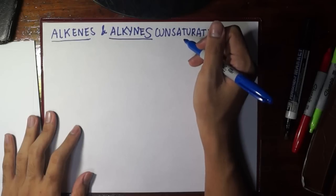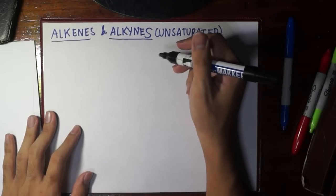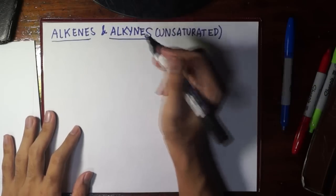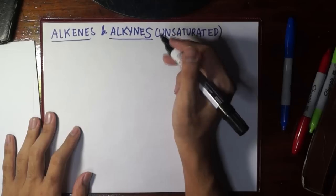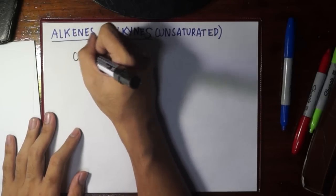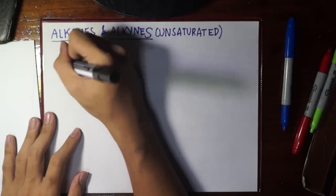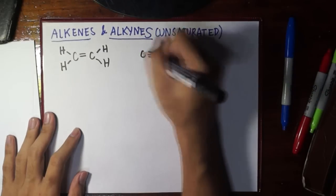We discuss these almost simultaneously because they have similar properties and similar types of reactions. Let's recall that alkenes are hydrocarbons with at least one double bond and alkynes are hydrocarbons with at least one triple bond. Let's start by drawing an example: the simplest alkene is ethene and the simplest alkyne is ethyne.